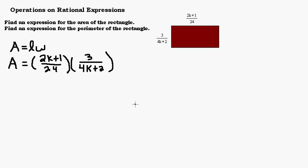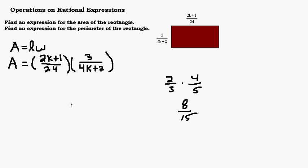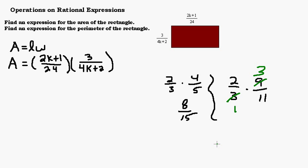You might think you're done, but really what you need to do is simplify that expression. You need to recall the rules for multiplying fractions. If you had a simple example like 2 thirds times 4 fifths, you recall that you're going to multiply straight across — that's just going to be 8 over 15. We need to do the same thing here, just multiply straight across. You can also cancel a common factor when multiplying fractions, and that's really what we want to look at in this example.